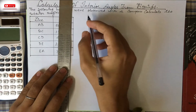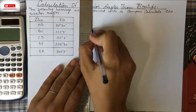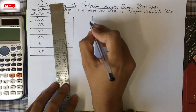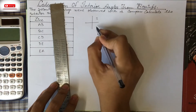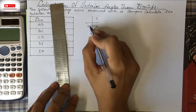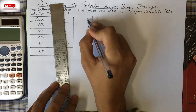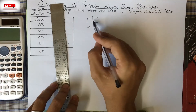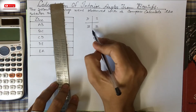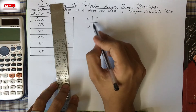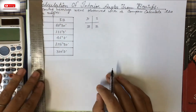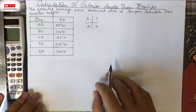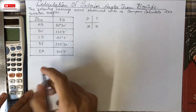Before drawing the figure, we need to know our quadrants. The first quadrant is 0–90°, the second is 90–180°, the third is 180–270°, and the fourth is 270–360°. We will draw each line according to its bearing position in the quadrant system.